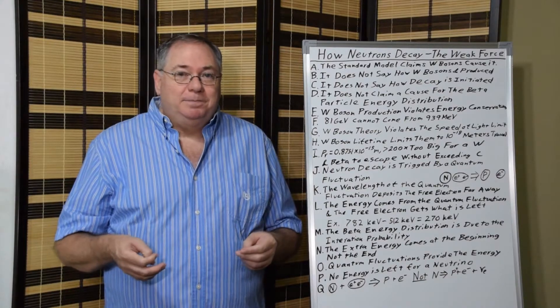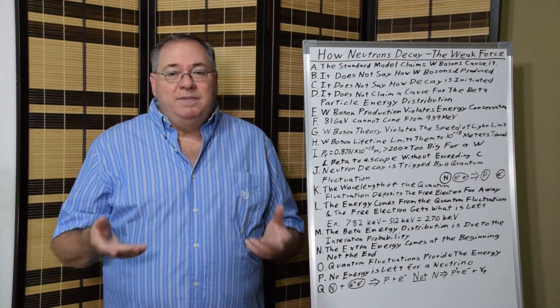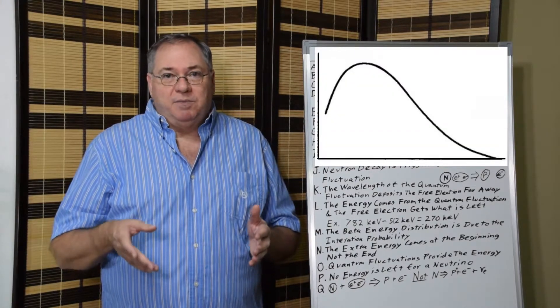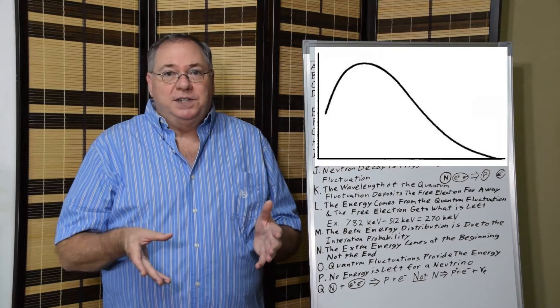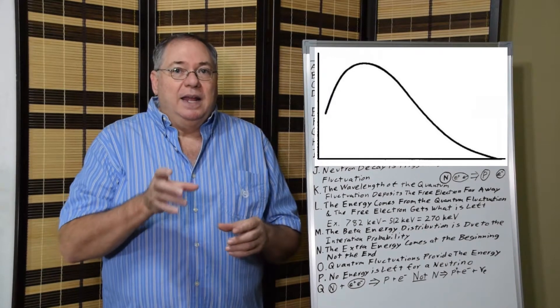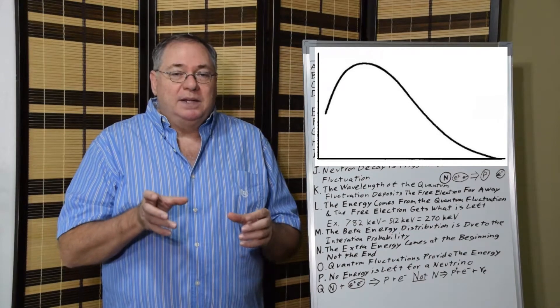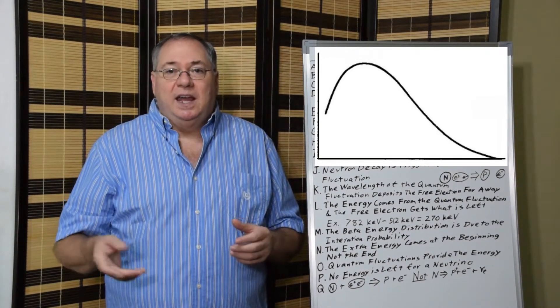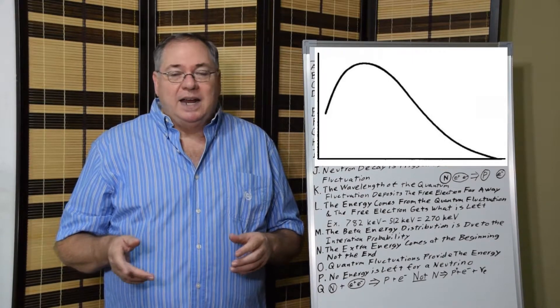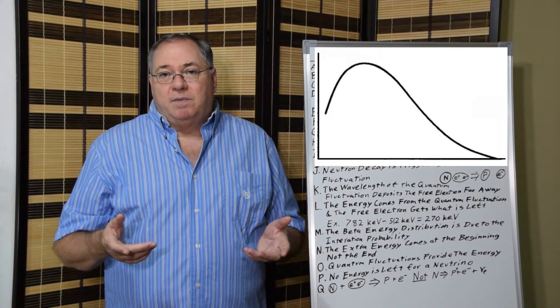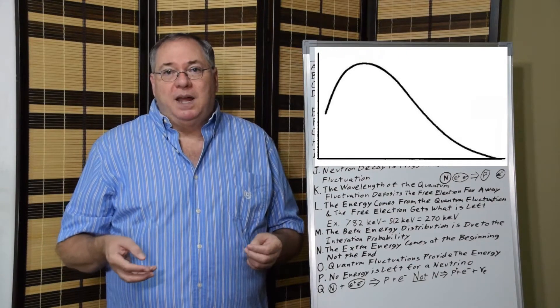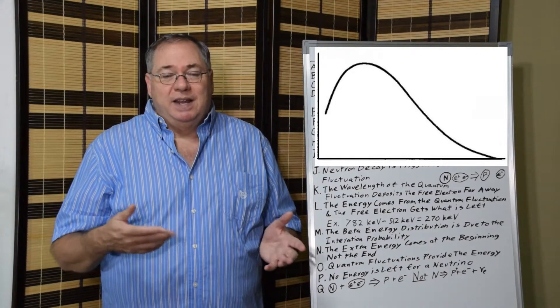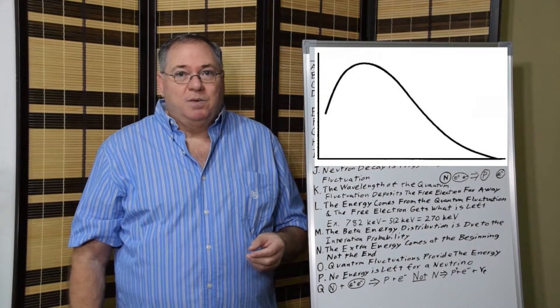It's just magic. Well, nothing in physics can be magic. You have to have a reason for it. And the reason for it is that we have a continuum of energies of quantum fluctuations. And then some of the continuum has a probability of interacting with the neutron to cause decay. And that probability function actually has a curve that's very similar to the black body spectrum.